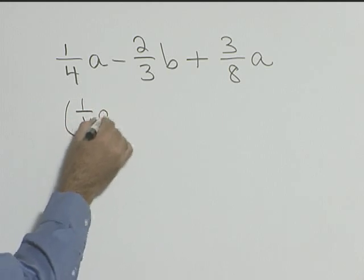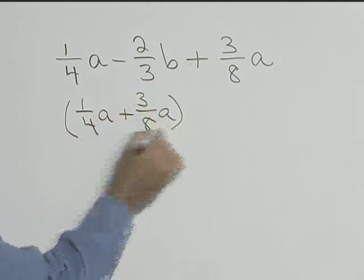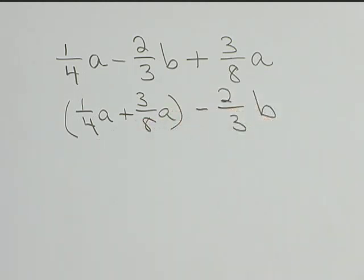So we'll write this as 1 fourth A plus 3 eighths A in parentheses. And we'll write our term with a B in it out to the side.